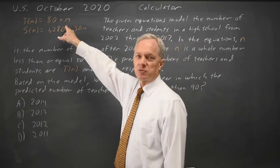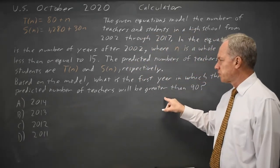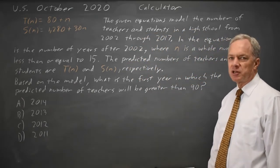The College Board gives us the equation for the number of teachers and the number of students in a school. Their question is about the first year in which the predicted number of teachers will be greater than 90.